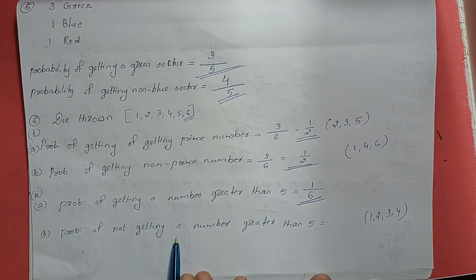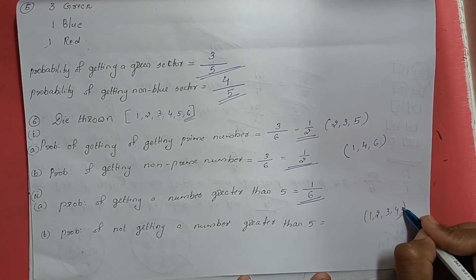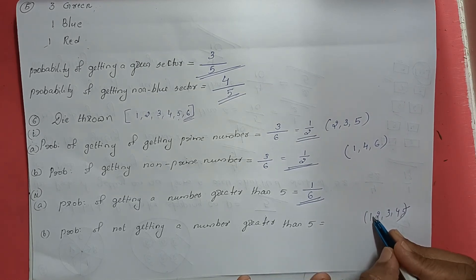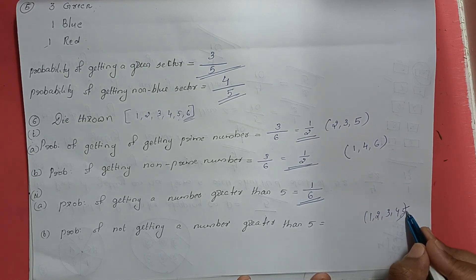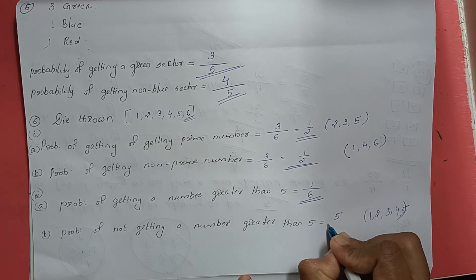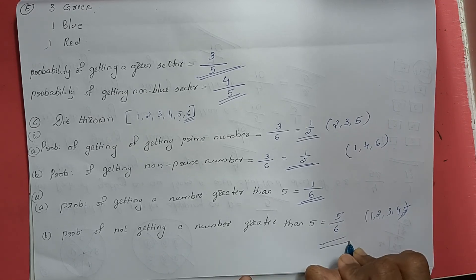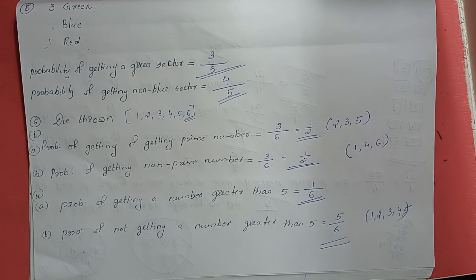Probability of not getting a number greater than 5: numbers not greater than 5 include 1, 2, 3, 4, and 5 — that is 5 numbers — divided by total outcomes which is 6. So the probability is 5 by 6. Thank you.